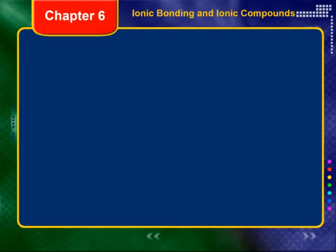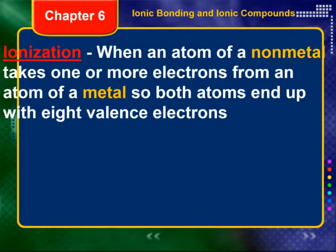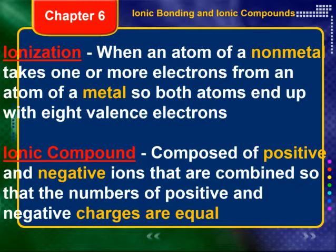Now we're going to move from covalent bonds into ionic bonds as well as ionic compounds. Whenever we talk about ionic bonds or ionic compounds, we have to start with ions, so we have to go through ionization. Ionization is when an atom of a non-metal takes one or more electrons from an atom of a metal, so both atoms end up with eight valence electrons. That's going to be the driving force — it's the pluses and minuses.